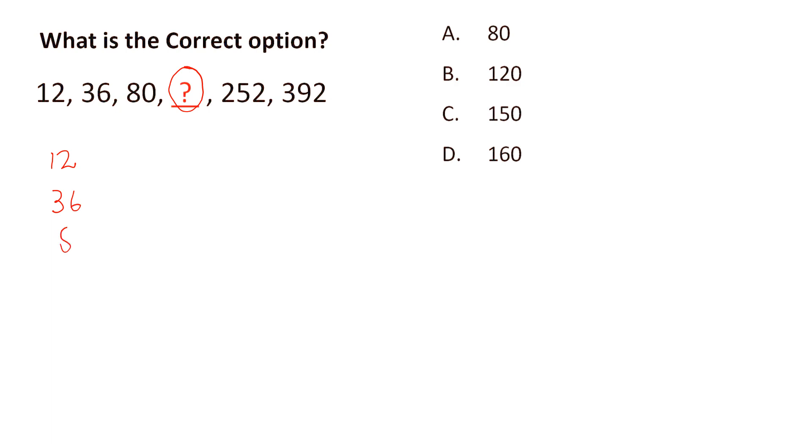So 12, 36, 80, then the missing term, 252, and 392. We can write 12 as 4 multiplied by 3.